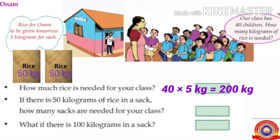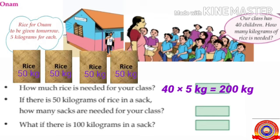Then how much rice is there in three sacks? Yes, 150 kilograms. So if there is 150 kilograms of rice, three sacks are needed. How much rice is there in four sacks? Yes, 200 kilograms. So if there is 200 kilograms of rice, four sacks are needed. If there is 50 kilograms of rice in one sack, how many sacks are needed for 200 kilograms of rice? Yes, four sacks.